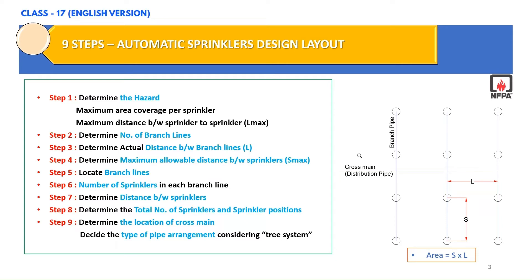Step 1: We shall determine the hazard occupancy classification, maximum area coverage per sprinkler, and maximum distance between sprinklers (Lmax), based on the hazard occupancy classification. Step 2: We shall determine the number of branch lines. Step 3: We shall determine the actual distance between branch lines, denoted by L. Step 4: We will determine the maximum allowable distance between sprinklers, denoted by Smax. Step 5: We shall locate the branch lines in the design area. Step 6: We shall calculate the number of sprinklers in each branch line. Step 7: We will determine the distance between sprinklers. Step 8: We shall determine the total number of sprinklers and place them in the complete office area. Step 9: We shall determine the location of the cross main and decide the type of pipe arrangement, considering a tree system.